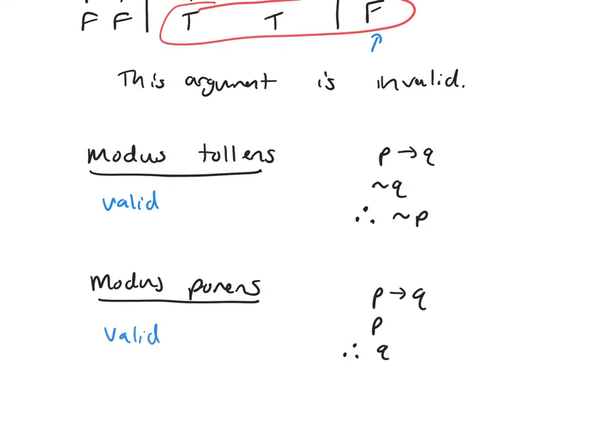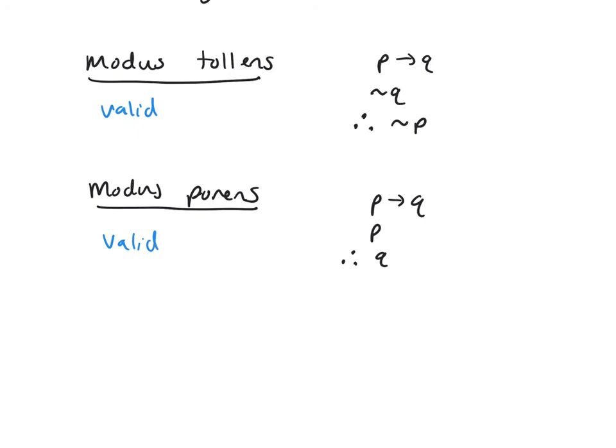And then we had the converse error. If P then Q, Q, therefore not P. This one was invalid.